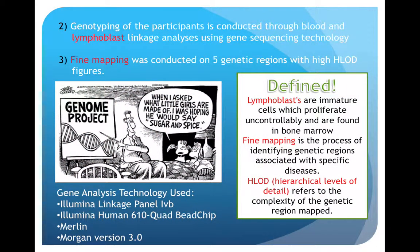A few key terms: lymphoblasts are immature cells that proliferate uncontrollably and are found in bone marrow. Fine mapping is the process of identifying genetic regions associated with specific diseases. HOLDs, or hierarchical levels of detail, refers to the complexity of the genetic region mapped. Genotyping on participants was done through blood or lymphoblastoid cells using gene analysis technologies such as the Illumina Linkage Panel 4B or the Illumina Human 610 Quad B chip. Once genotyping was completed, fine mapping was conducted on five genetic regions with high HOLD figures to identify genetic regions that could be associated with OCD.